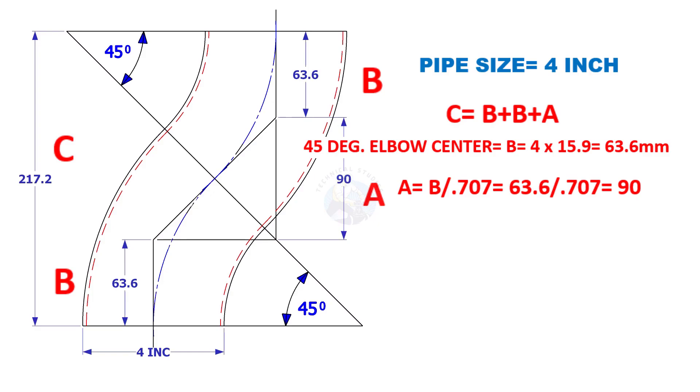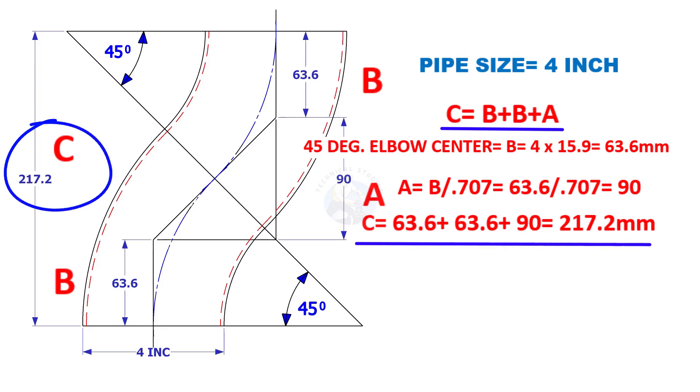The distance of A is B divided by 0.707, which is 90 millimeters. Now, B plus B plus A is 217.2 millimeters.